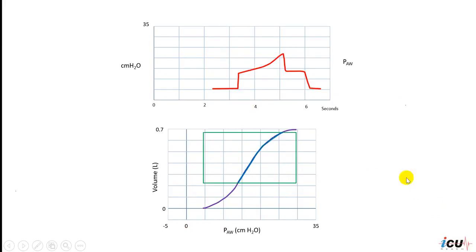In this example, the stress index is more than one and that corresponds to a concave pressure tracing. You can see how the pressure tracing is concave here. This indicates probable overdistension. The patient is ventilated at the right end of the PV curve and there is a possibility of overdistension.